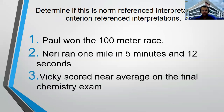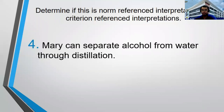Number 3: Vicky scored near average on the final chemistry exam. The keyword is 'near average,' so this is norm reference interpretation because the word 'average' describes the performance of other students who took the same test as Vicky. Number 4: Mary can separate alcohol from water through distillation. The keyword is 'can,' so this is criterion reference interpretation — the criteria is to separate alcohol from water through distillation, and Mary passed that criteria.